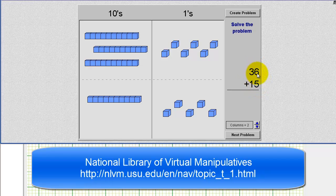Notice to model thirty-six, we have three ten blocks and six one blocks. And for fifteen, we have one ten block and five one blocks.